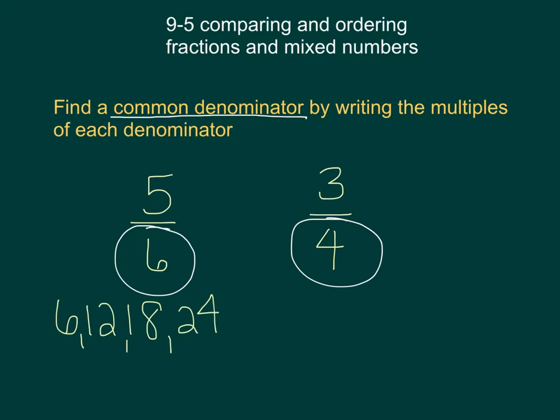If we list the multiples of 4, we have 4, 8, 12, and 16. And so you can see that both of them have a 12 in common. So we're going to make our denominator a 12.